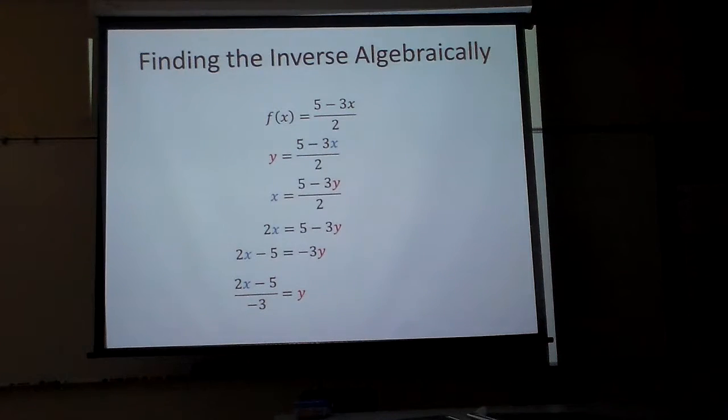So that would be my inverse function. And now I'm going to rewrite it with that f of negative one right there. Two x minus five divided by negative three. That is the inverse function. This is the inverse function of that one.